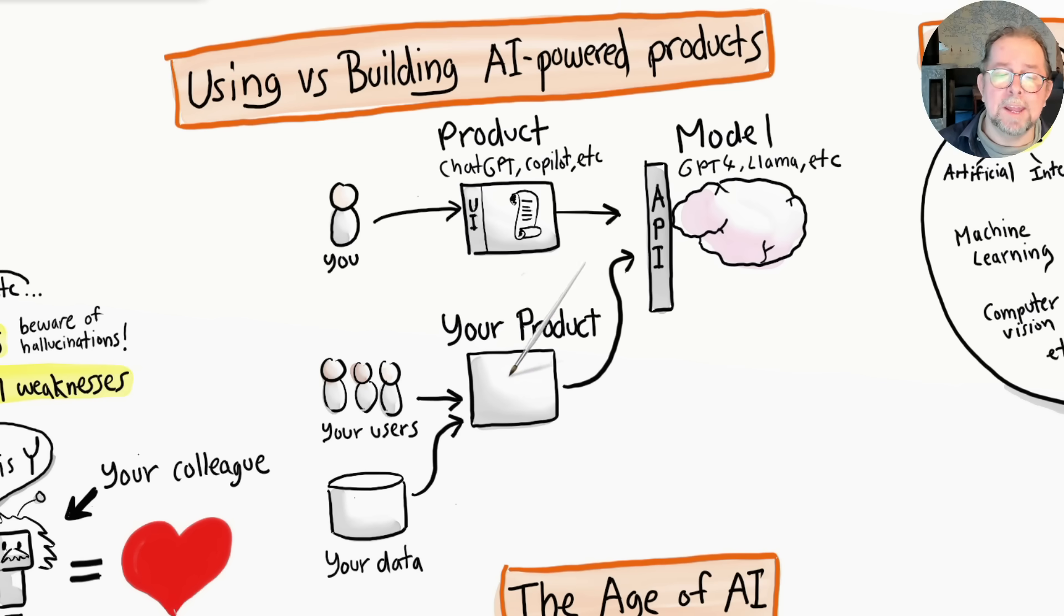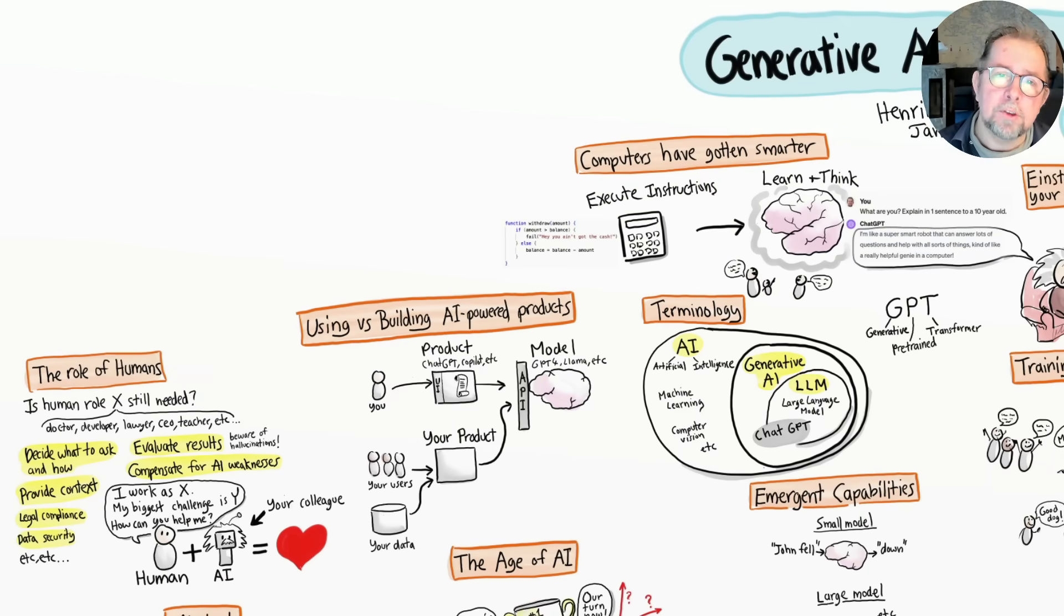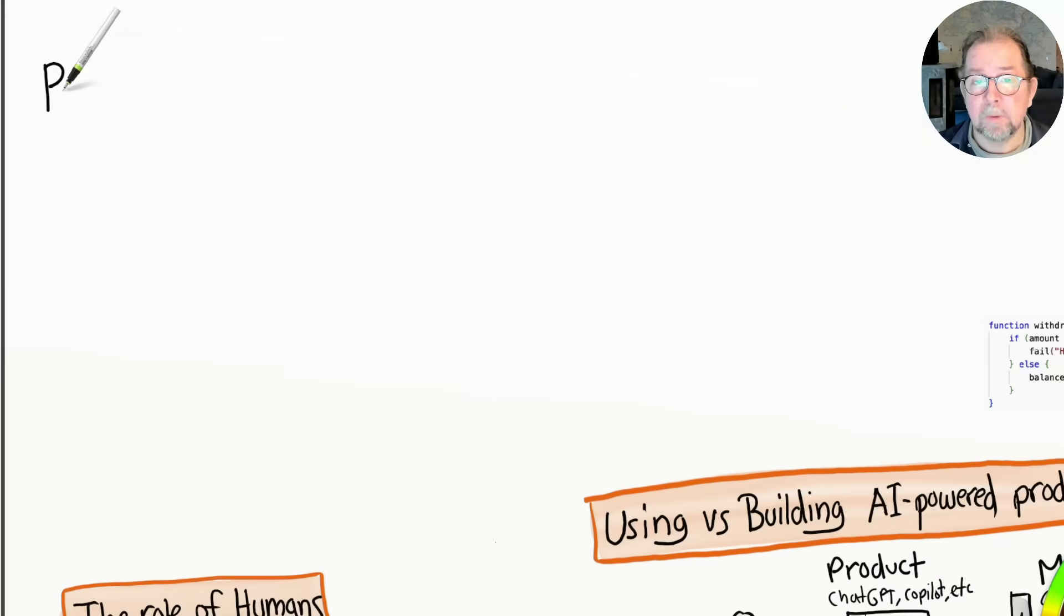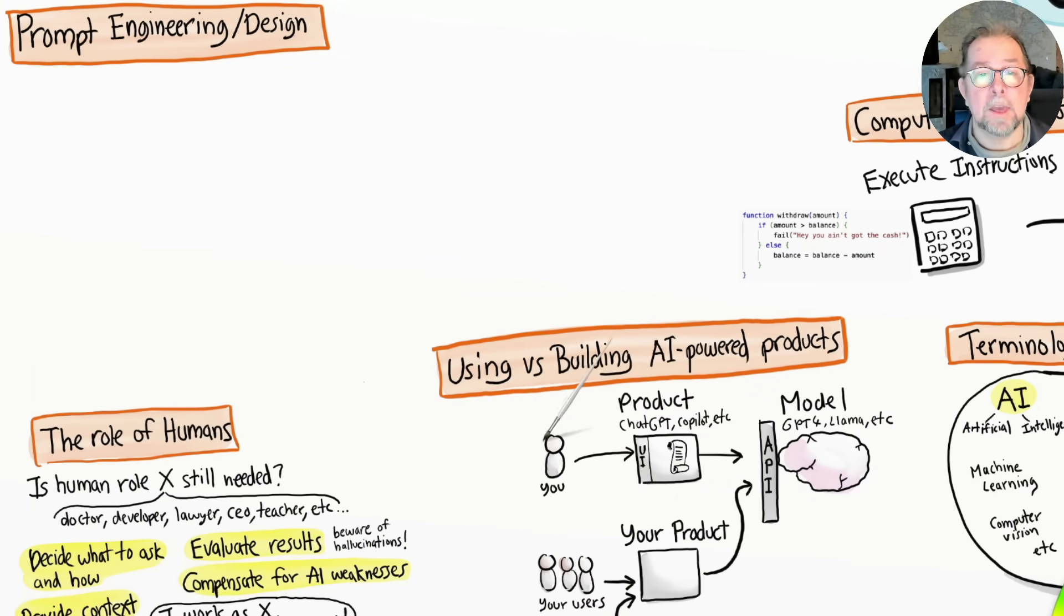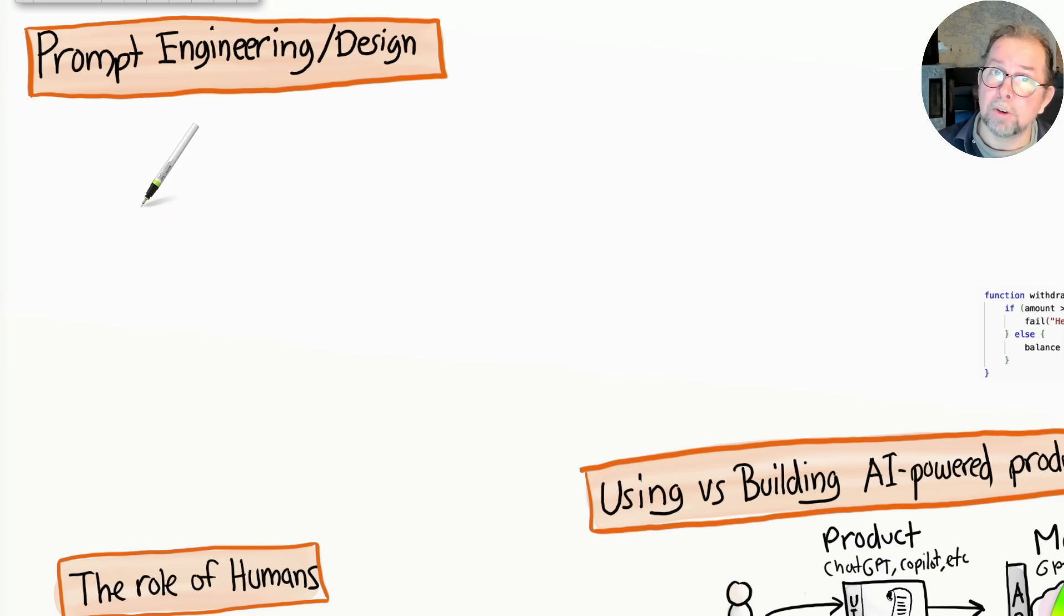In order to use generative AI effectively, you need to get good at prompt engineering, or prompt design as I prefer to call it. This skill is needed both as a user and as a product developer, because in both cases you need to be able to craft effective prompts that produce useful results from an AI model.